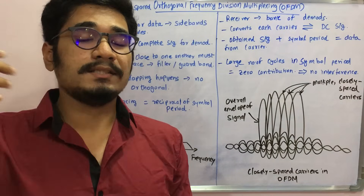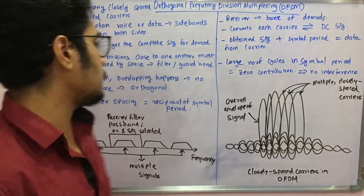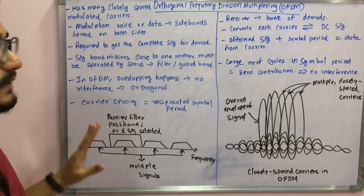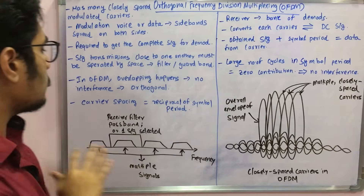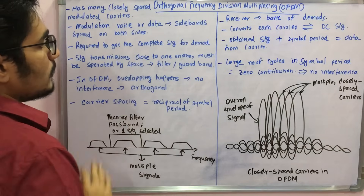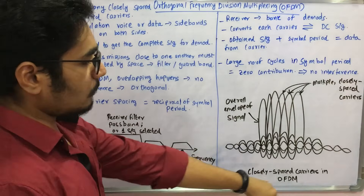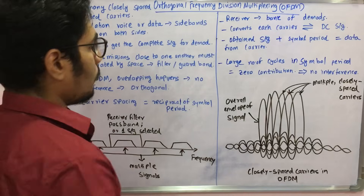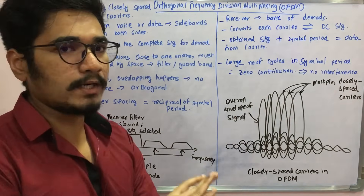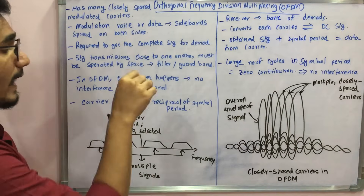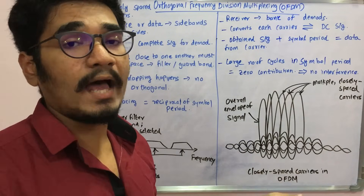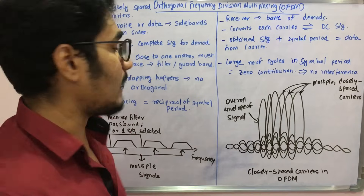Guard bands are used in other schemes to distinguish whether the incoming signal is a data signal or a voice signal. But in OFDM, we don't have this guarding mechanism, filtering scheme, or protection mechanism. Instead, what we have in OFDM is overlapping of the signals among the closely spaced carriers. You may think that interference will happen, but no — absolutely no interference occurs, because this is orthogonal, meaning the carriers are at right angles to each other.